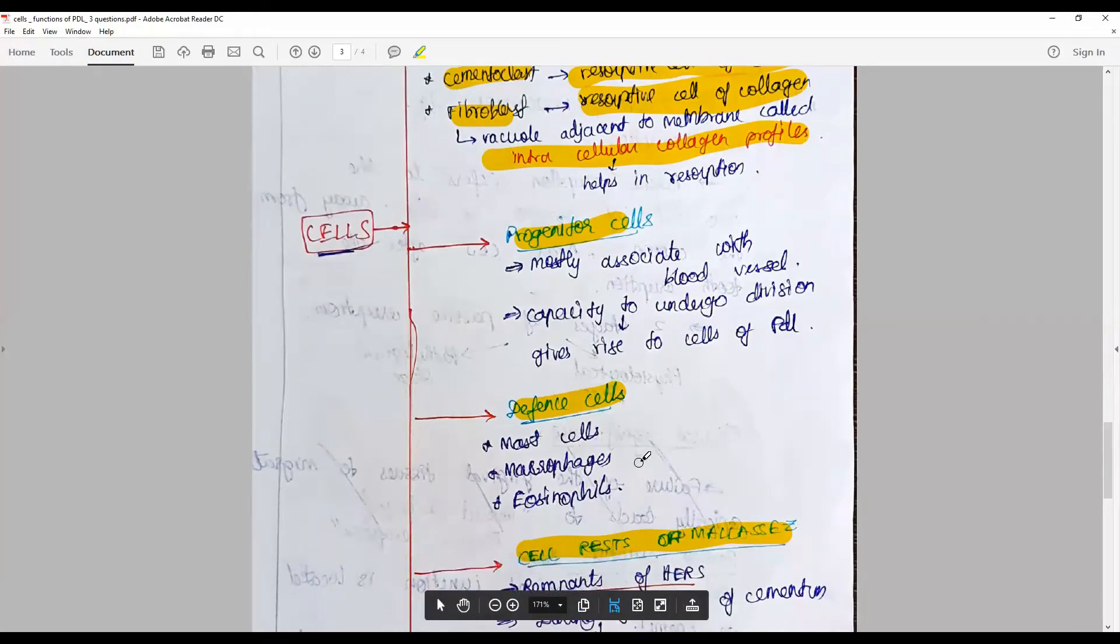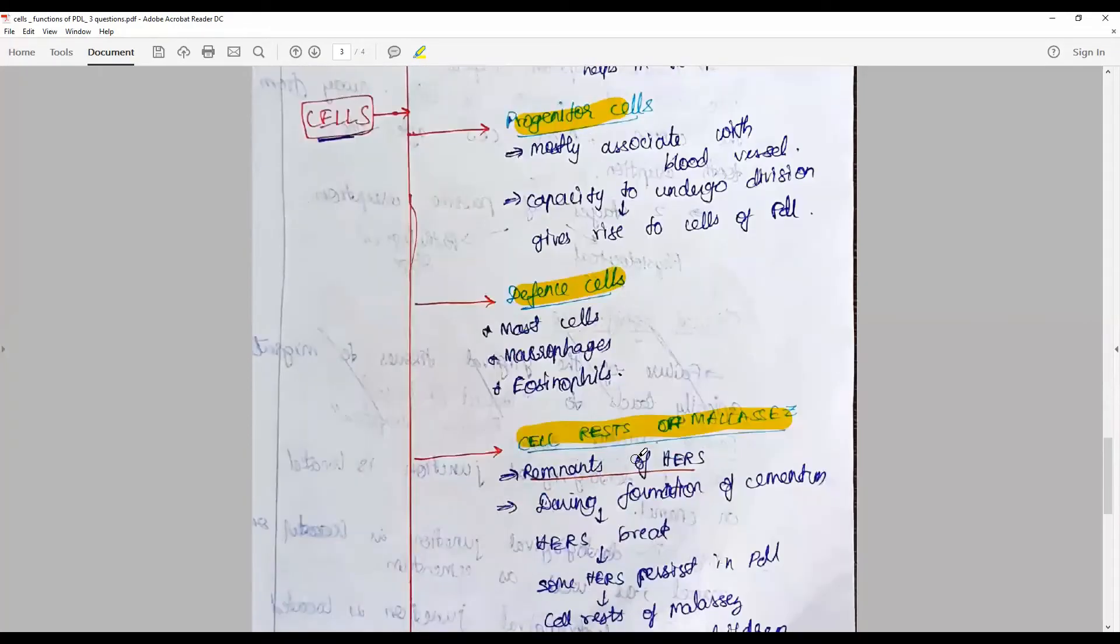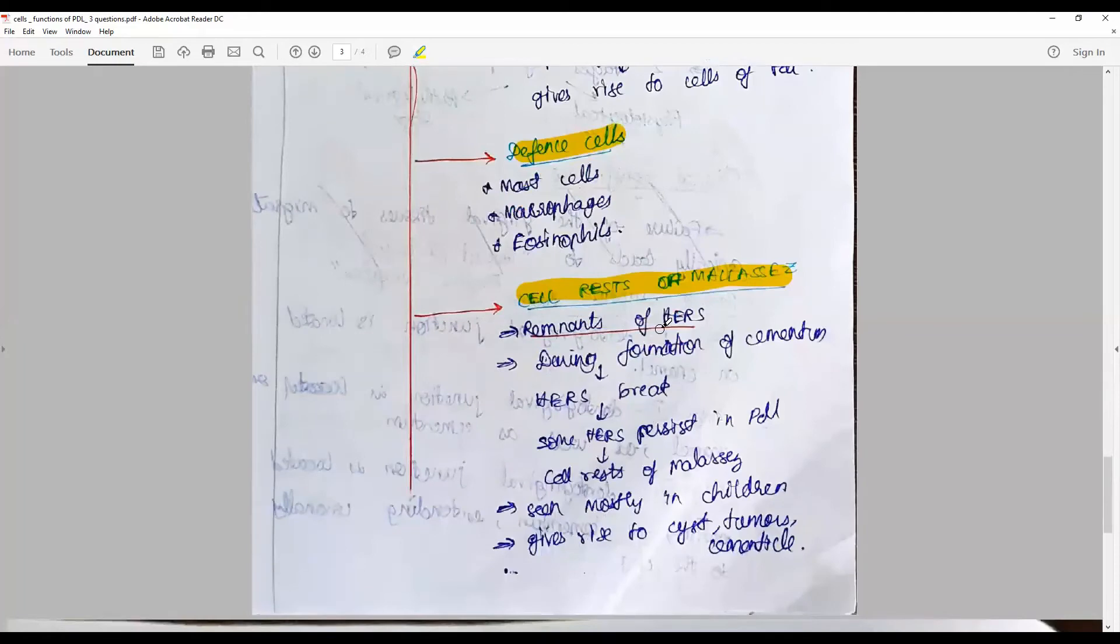The cell rest could be cell rest of Malassez. They are the remnant of Hertwig's epithelial root sheath. During the formation of cementum, HERS breaks while some proceeds to give rise to progenitors for cementoblasts. Some persist in PDL as cell rest of Malassez, usually seen in young children. They can give rise to cysts, tumors, or sometimes are associated with denticles.